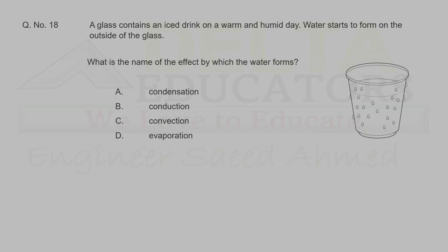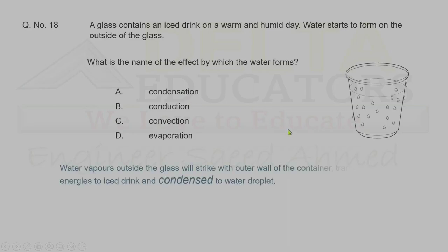Question 18. A glass contains an ice drink on a warm, humid day, and water forms on the outside. Water vapor in the air strikes the cold outer wall of the glass, loses energy, and condenses into droplets. This process is called condensation. Correct option is A.